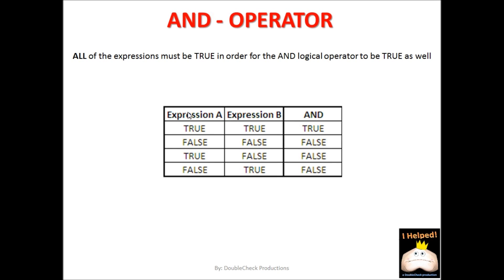Let's look at our example here. We have expression A and expression B, and then we have our value determined by the AND operator. In the first row, A is true and B is true, so AND is true. Next, A is false and B is false — neither one is true, therefore AND comes out false. Here we have A is true but B is false — our requirement is that all expressions must be true, so that is not the case. Same thing with A is false and B is true — all of them are not true, therefore the AND operator comes out as false. The only one that comes out true is where expression A and expression B are both equal to true.